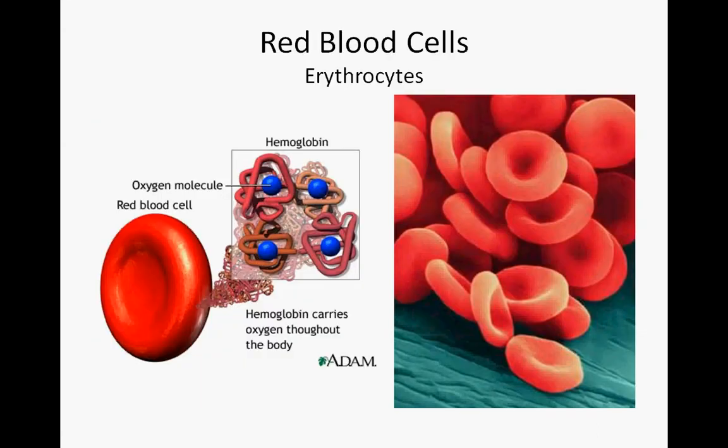Among blood's solid components, red blood cells — erythrocytes — are by far the most abundant, accounting for nearly 45% of blood's volume. A single milliliter of blood contains roughly 4 million red blood cells. These disc-shaped cells are packed full of the essential protein hemoglobin, whose iron-containing heme group gives the cells their red color. The primary role of hemoglobin is as an oxygen carrier. A hemoglobin molecule contains 4 heme groups, each of which has the ability to bind an oxygen molecule.